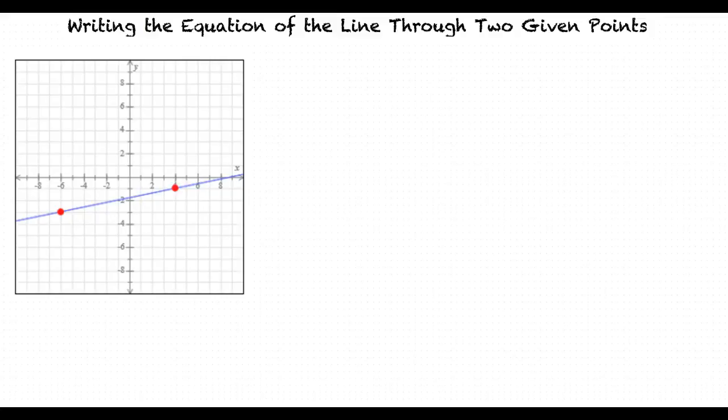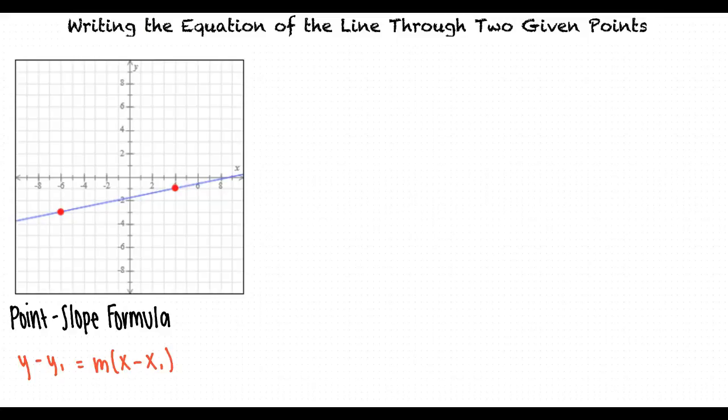We'll have to find the slope. We can use the point-slope formula to complete this problem, and slope is one of the necessary elements we'll need for this. The point-slope formula states: a line with slope m passing through the point x1, y1 has the following equation: y minus y1 equals m times the quantity x minus x1.